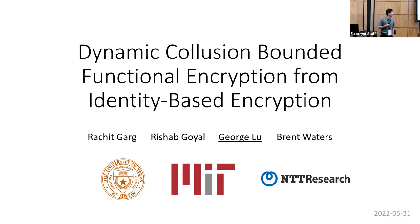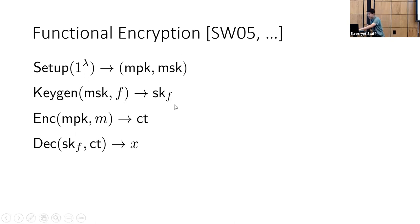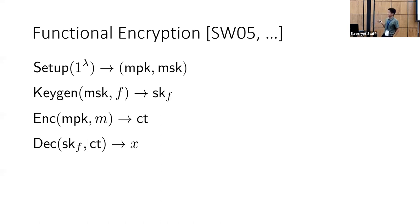We can start with a concept many of you are probably already pretty familiar with, which is just plain old functional encryption. In this setting, you have a setup algorithm and a keygen, which produces secret keys associated with a particular function. And just like any public key primitive, you can encrypt with the public key and decrypt with the secret keys.